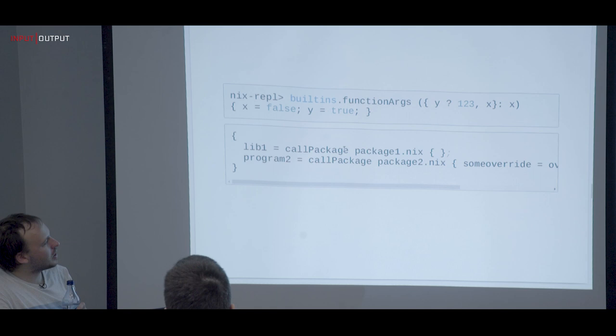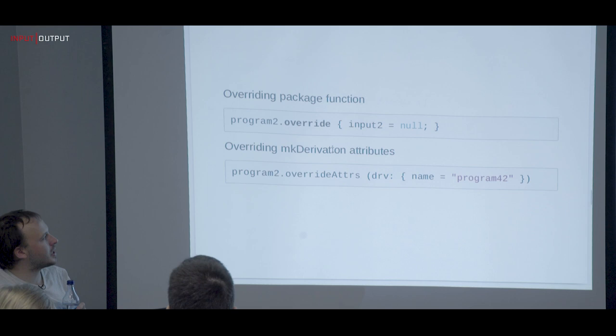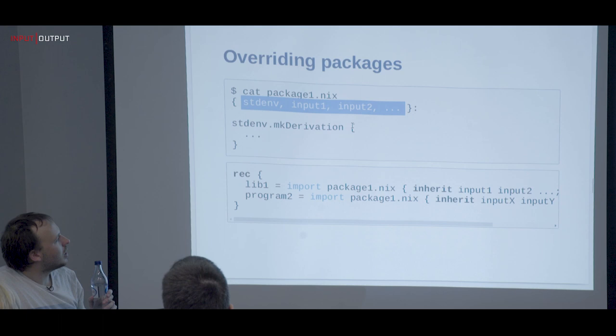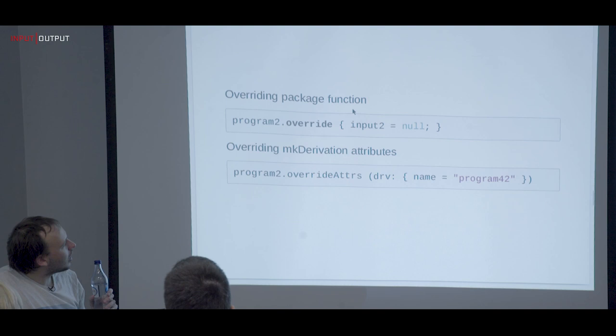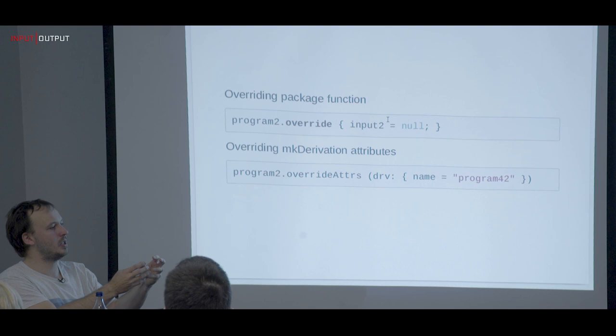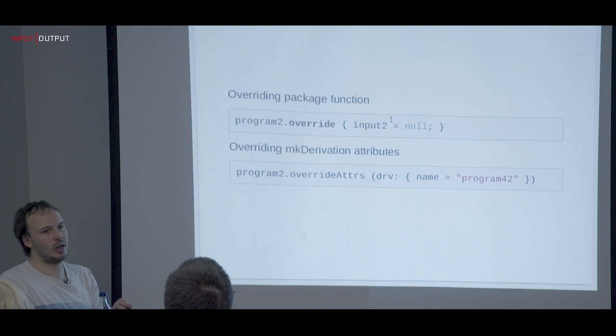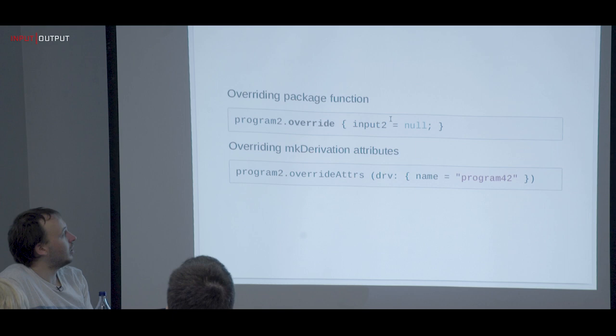What `callPackage` also does is add an `override` function to the derivation, so you can take this derivation and override its inputs. These are the inputs we used for that derivation and you can override them. For example, you can take GHC, say override to use a different version of libgmp, and you now have two GHCs — one built with one version of the library and one with the other.